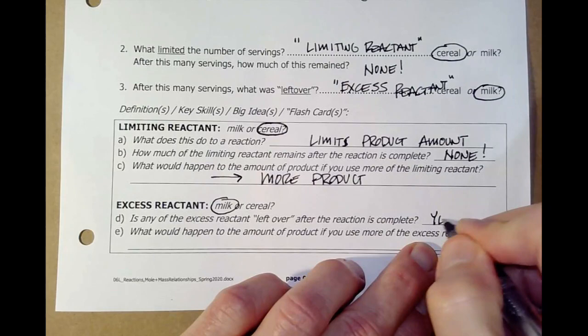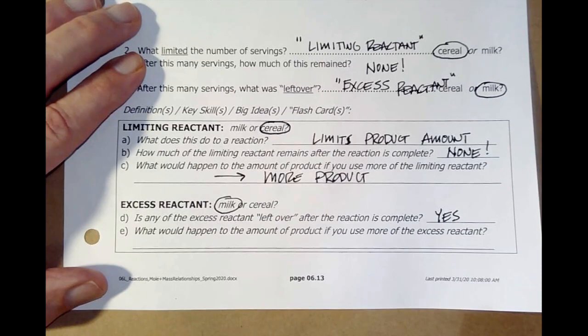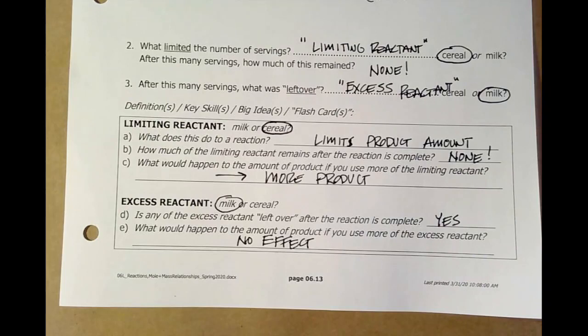The excess reactant here was milk. Was there any left over? Yes. That's the whole point. It was excess. There was stuff left over at the end. If I had more milk, how many more servings would I have produced or been able to have? None. There's no effect. No effect. You can add all you want of the excess. It was excess already. Adding more doesn't do anything.